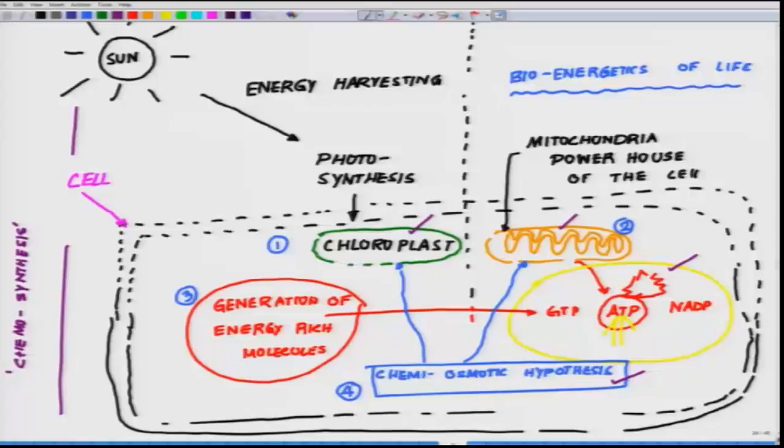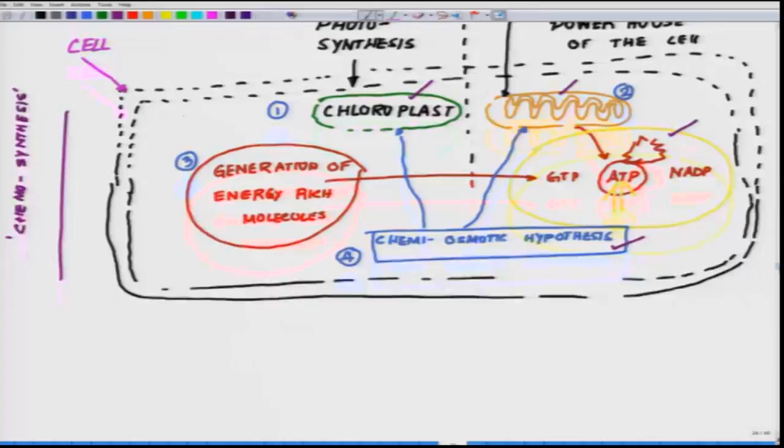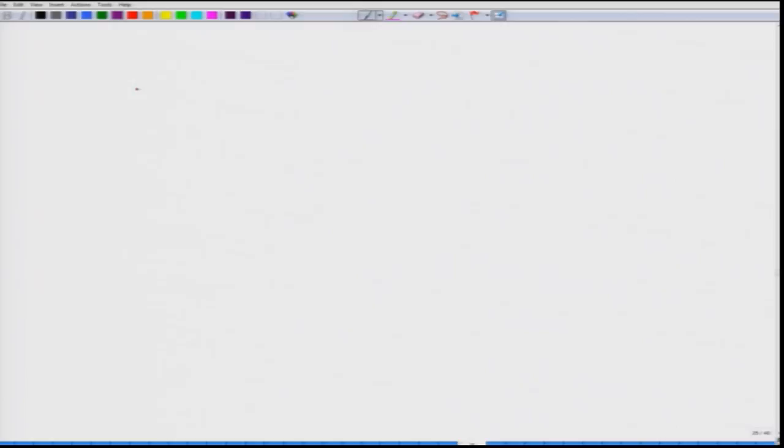To start off, if we look at the reaction of photosynthesis, the reaction of photosynthesis is something like this. As I told you, H2O plus CO2, a simple reaction, in the presence of light gives you carbohydrate plus oxygen. This is your carbohydrate and this is the byproduct which is the oxygen.